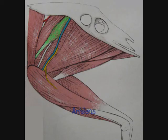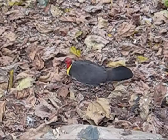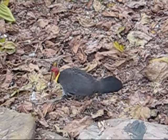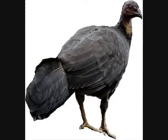Embiens and pubicchiofemoralis. These are the muscles of a bird's hind limb. They flex, extend, abduct, adduct, and rotate the hind limb.